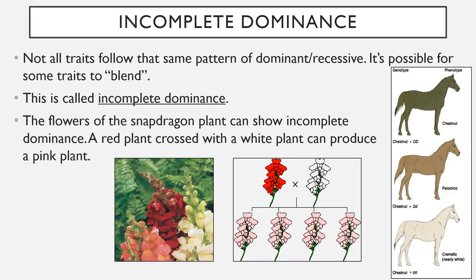With complete dominance established, we now look at incomplete dominance. Not all traits follow the same dominant-recessive pattern — it is possible for some traits to blend. Incomplete dominance is where the dominant trait is not a complete takeover, just a partial one. For example, the flowers of the snapdragon plant can show incomplete dominance: if you cross a red plant with a white plant, it produces pink plants, because the red and white mix to make pink. There are real photos showing red, white, and pink snapdragons.